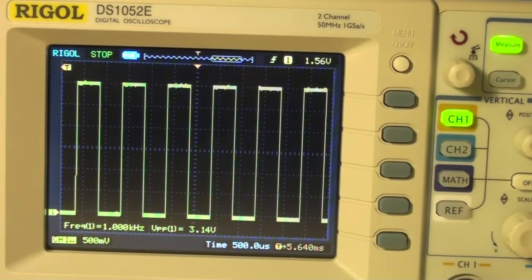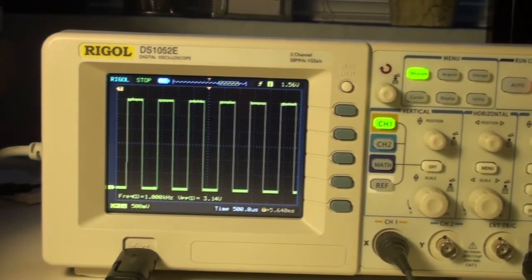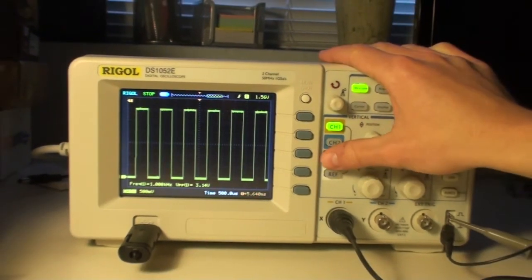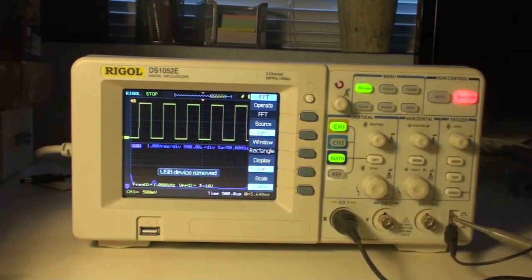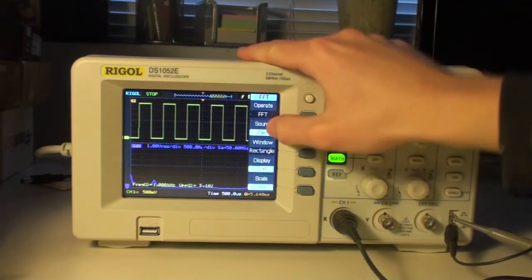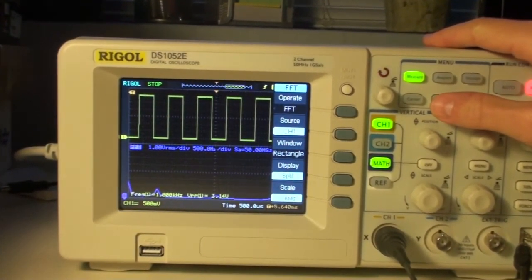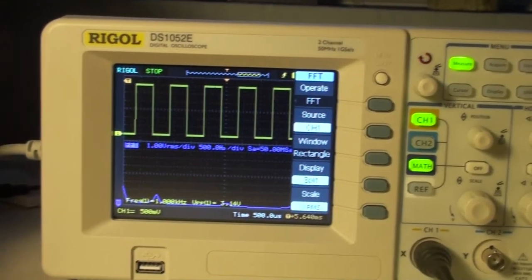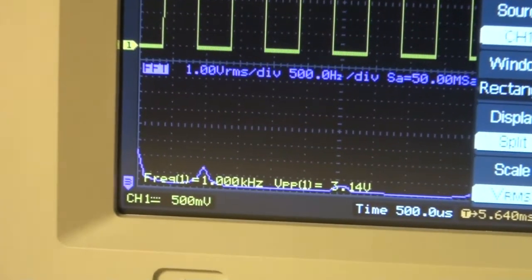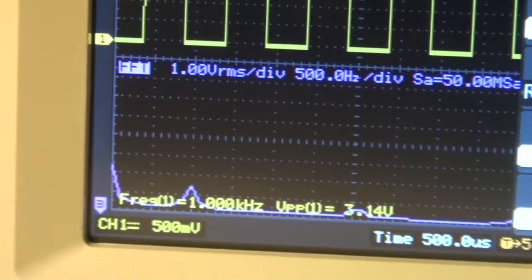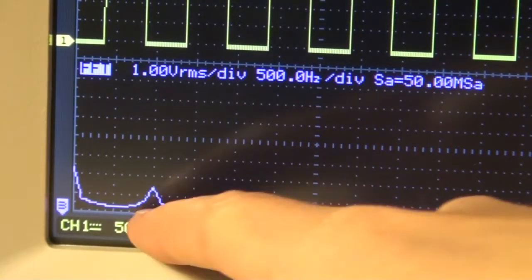Okay, then let's have a look at the math function. The math function on the scope enables the scope to do different math calculations. For example, you can do FFT analysis on a signal, which is currently enabled, and you'll see here in the bottom we have the FFT shown of this one kilohertz signal. That's also why, let me disable those, there you'll see that the one kilohertz signal is shown.